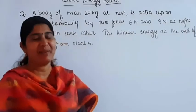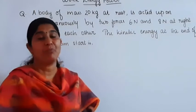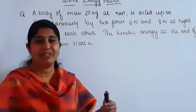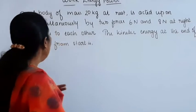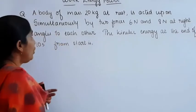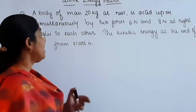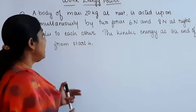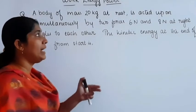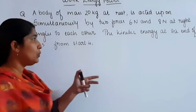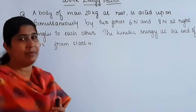Hi students, welcome back. Today I am discussing problems related with work, energy, and power. Our first question: a body of mass 20 kg at rest is acted upon simultaneously by two forces — 6 Newton and 8 Newton — at right angles to each other.